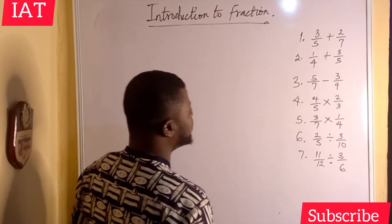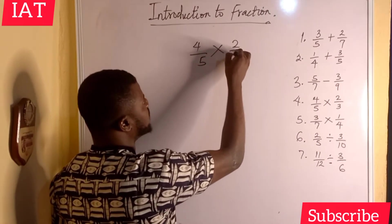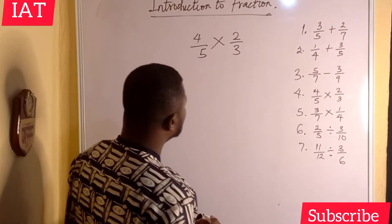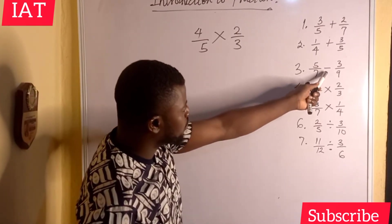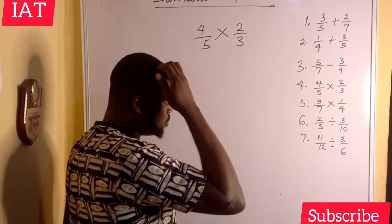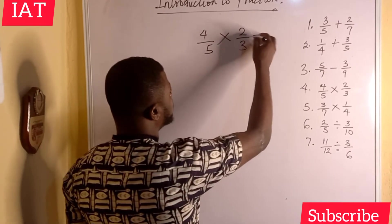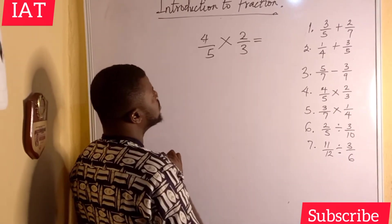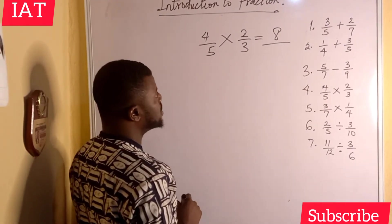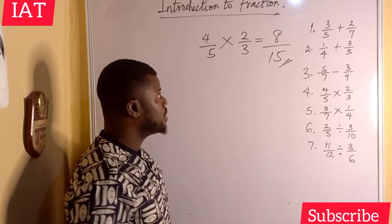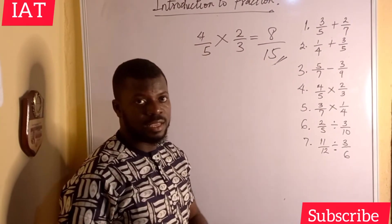Let's solve number four: we have four over five times two over three. For multiplication, the quick method is simply to multiply numerator by numerator and denominator by denominator. So four times two gives eight, and five times three gives 15. The answer is eight over 15.